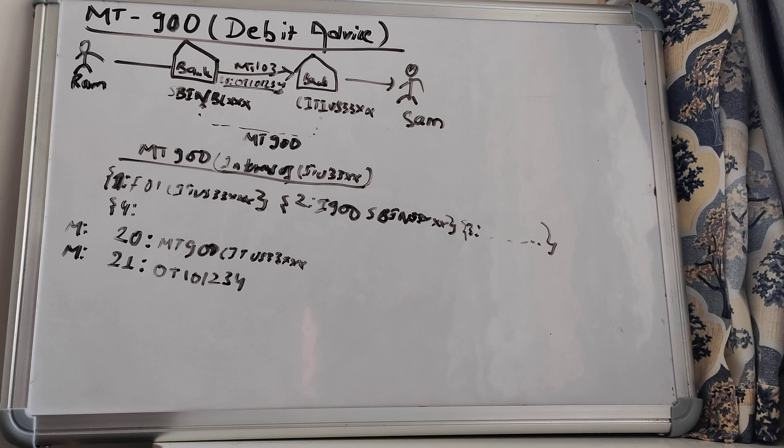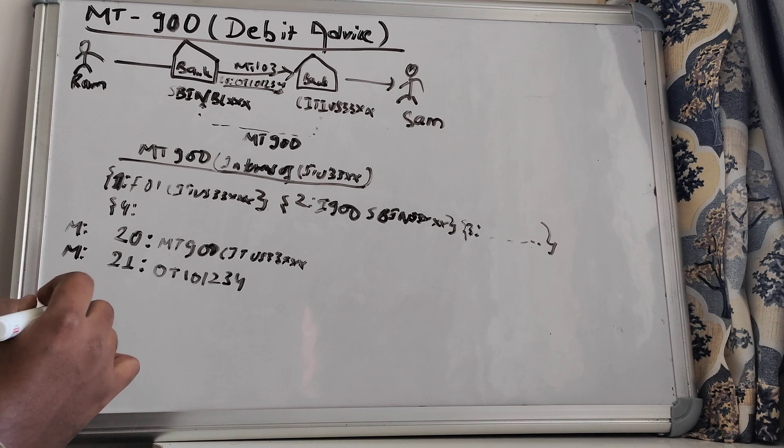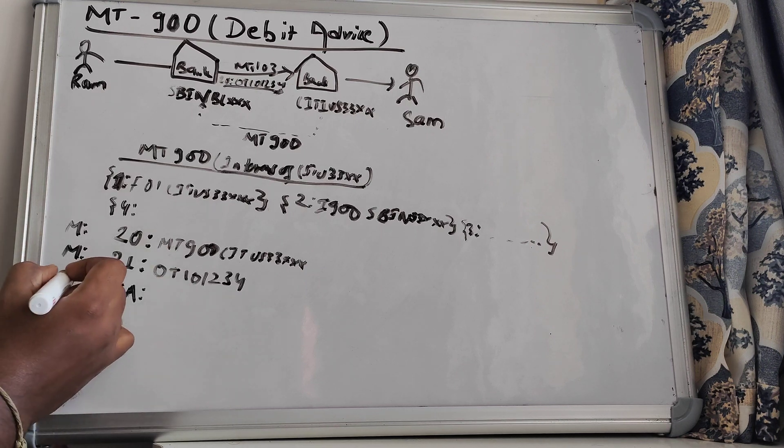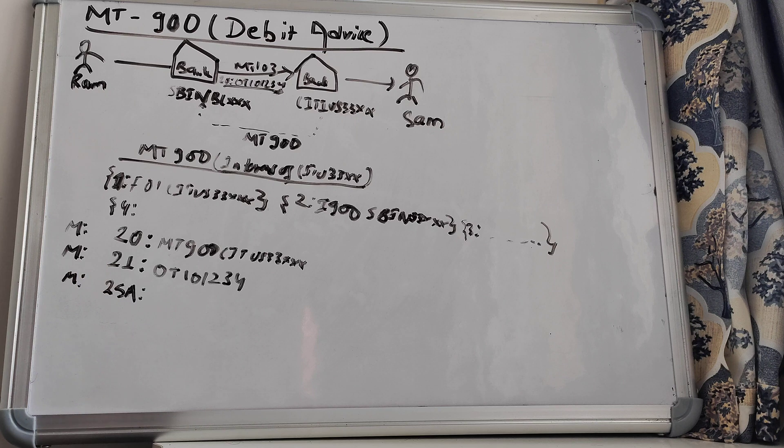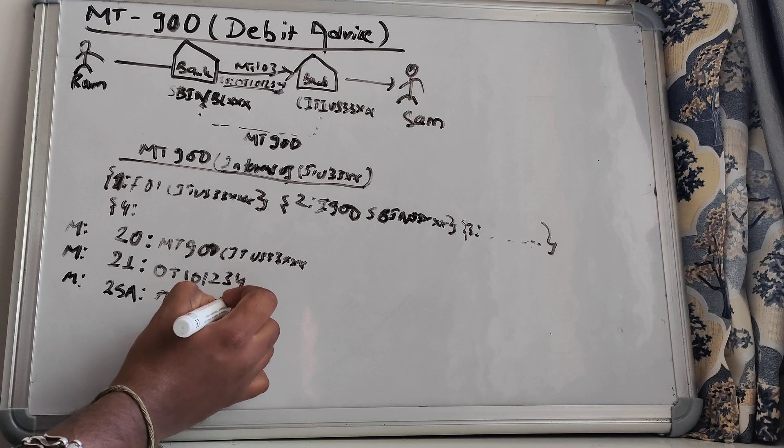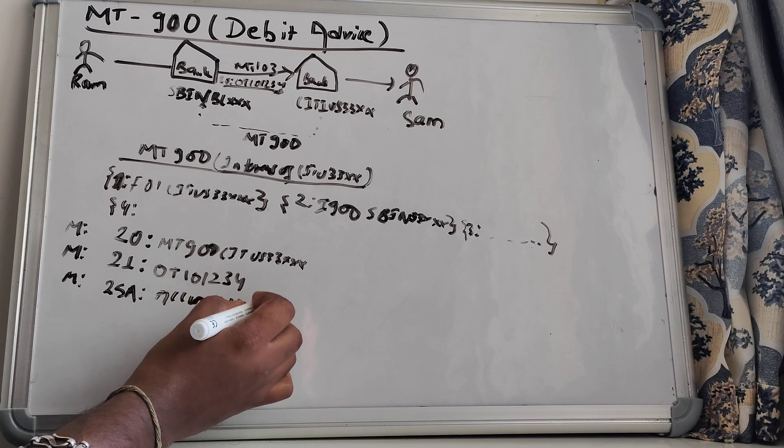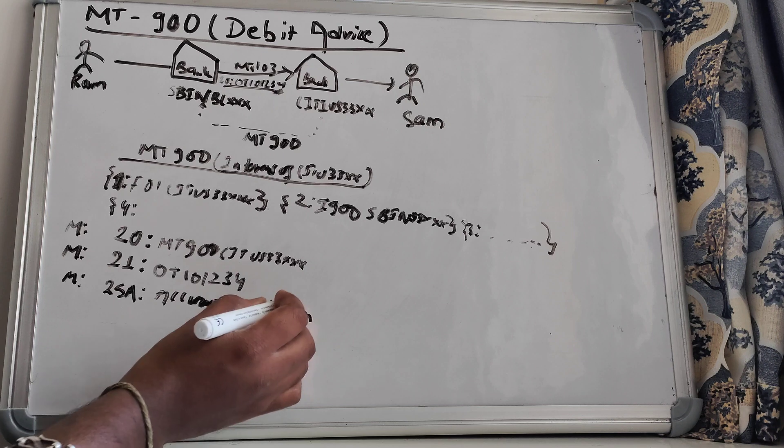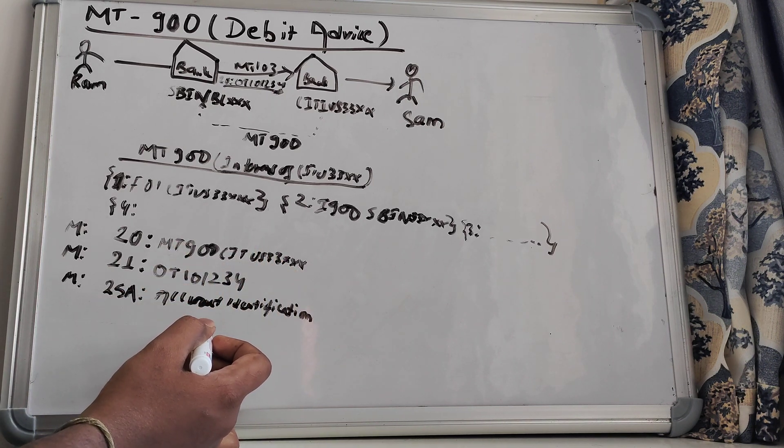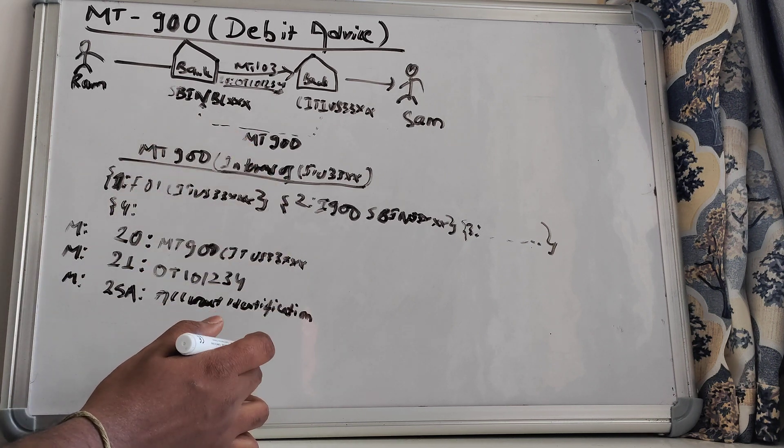And then we have 25A. This is also a mandatory tag, and this is nothing but the account identification. So this will be the account identification. It can be the account of SBIN BL 33XX, which is available at the City US 33 bank.